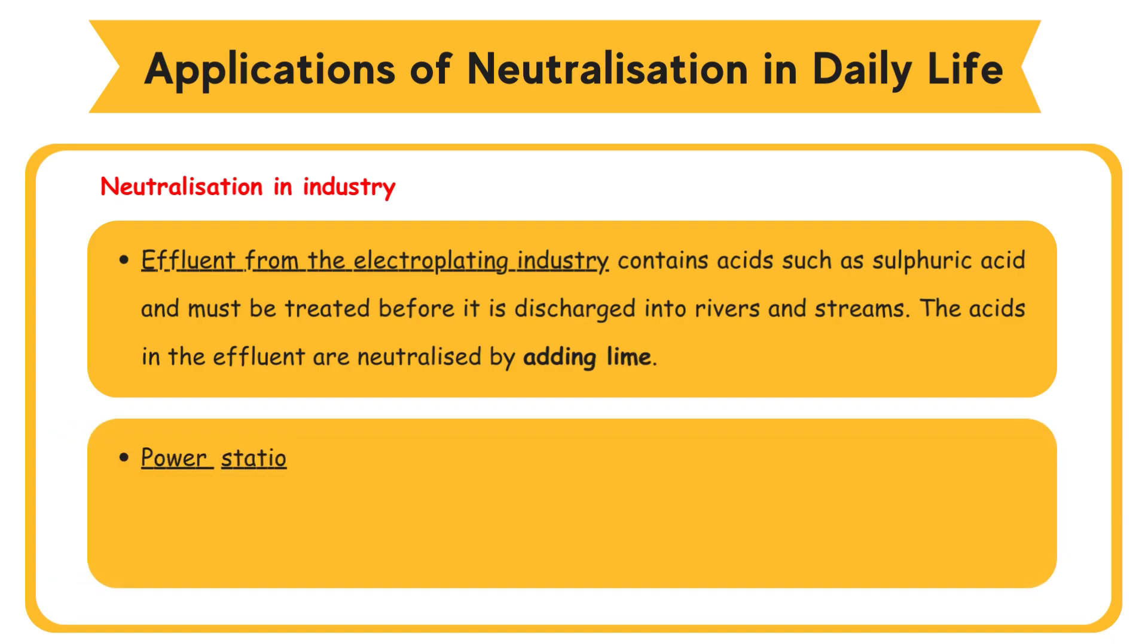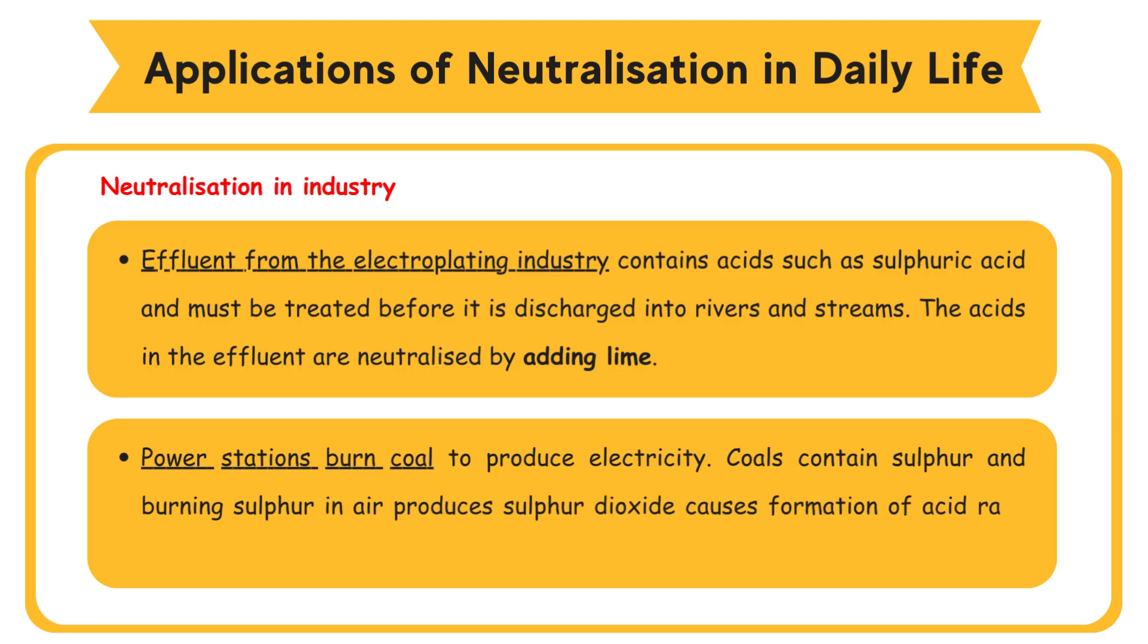Power stations burn coal to produce electricity. Coals contain sulfur, and burning sulfur in air produces sulfur dioxide, which causes formation of acid rain. The lime neutralizes the acidic sulfur dioxide.